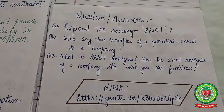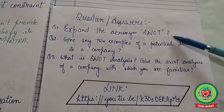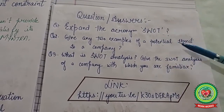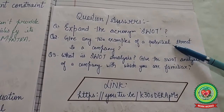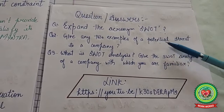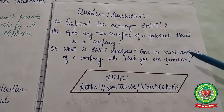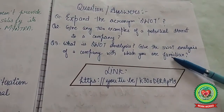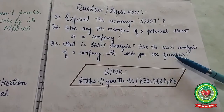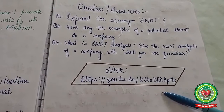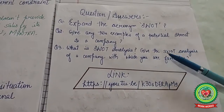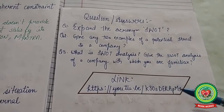Now you have to write answers to these questions: first, expand the acronym SWOT; second, give any two examples of potential threats to a company; third, what is SWOT analysis — give the SWOT analysis of a company with which you are familiar. Go through various links so that you can write better answers to these questions. Thank you.